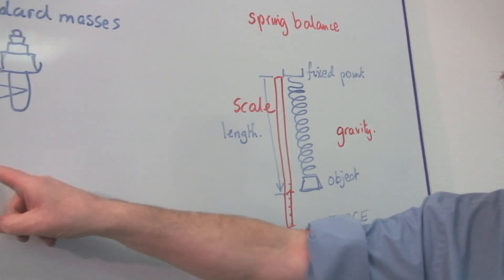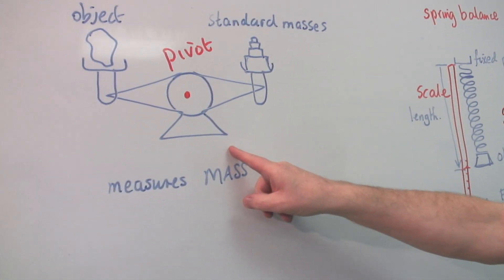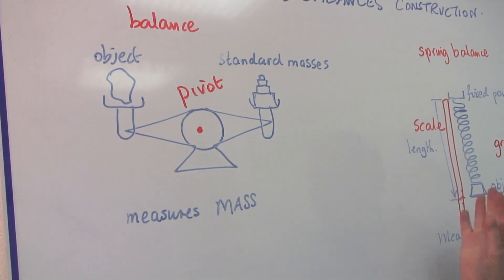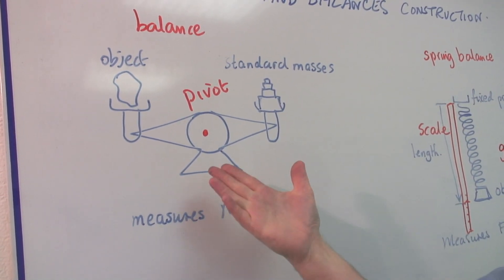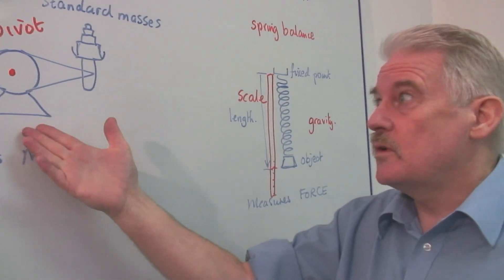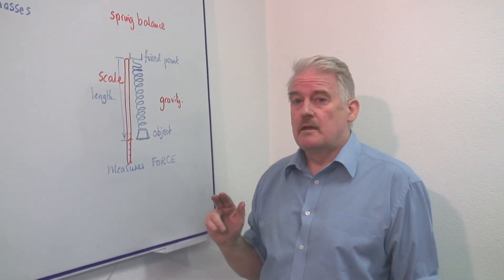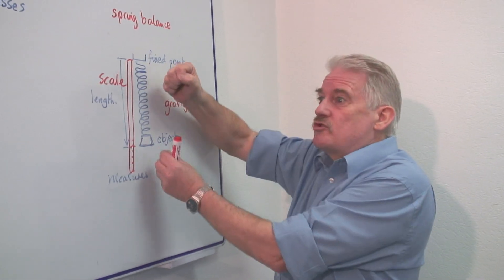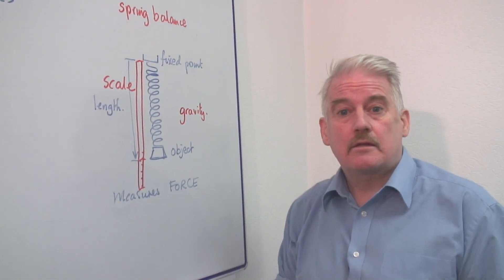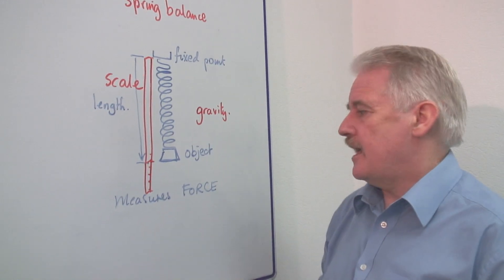Well gravity also operates this, but not just Earth's gravity. We can use this in any situation where we have gravity. This works on the Moon as well. This doesn't, because the actual gravity stretching the spring is less on the Moon. So things weigh less.